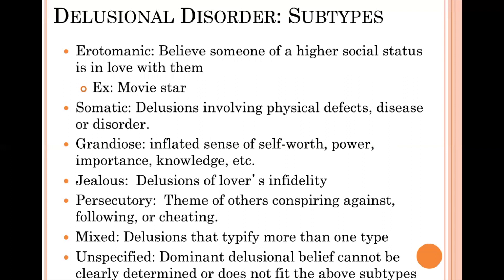Jealous delusions involve being convinced that one's partner or lover is unfaithful, with no evidence to support this — and there may even be evidence that disproves it. Persecutory delusions are the most common type, featuring themes of being conspired against, followed, cheated, or harmed by others. Mixed delusions fall into multiple categories, and unspecified delusions do not clearly fit any of these categories.